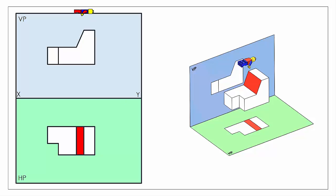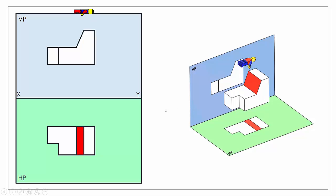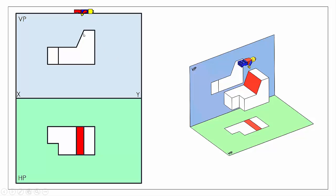Here you can see we have our two-dimensional elevation and plan of an object, and here we have a 3D image of the same object. If you remember from our previous video, in order to get the true shape of an object you have to look straight in at it, or perpendicular to it. If we focus on this red surface here, we can see that in neither my front elevation nor plan view do I see a true shape of it. In our plan view we see a portion of the red shape but it appears narrower, or foreshortened as we call it.